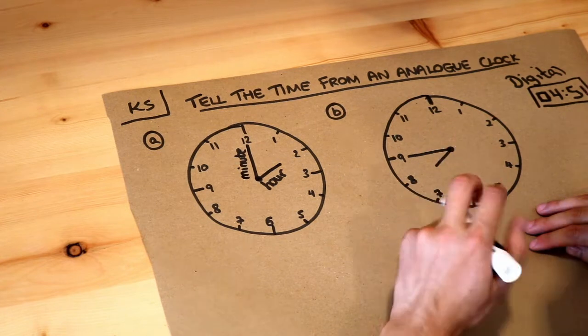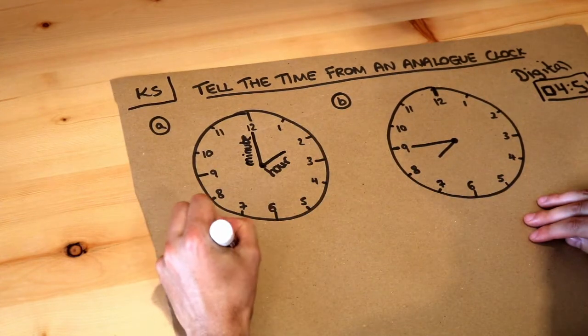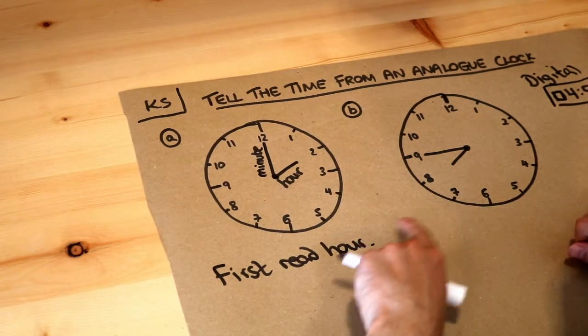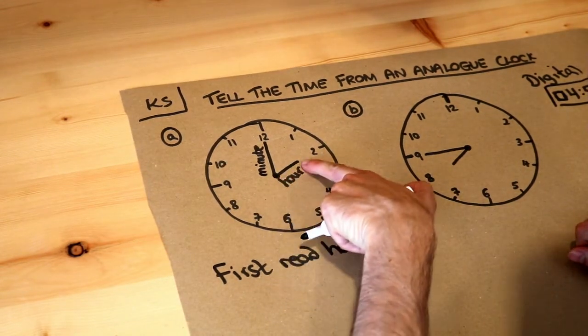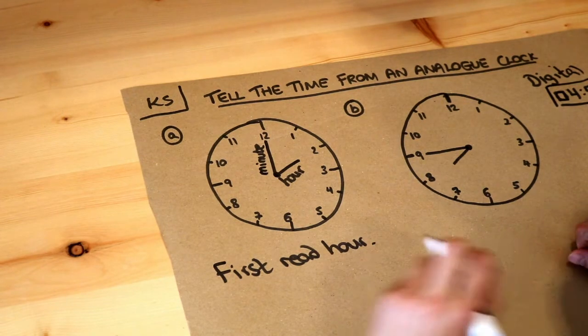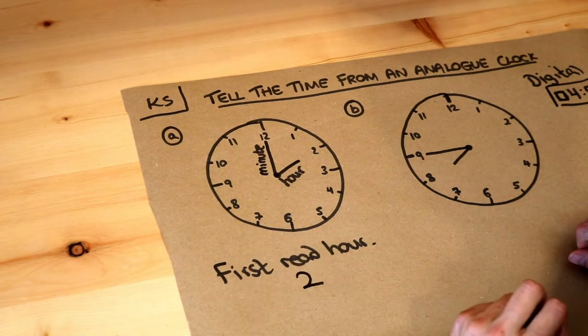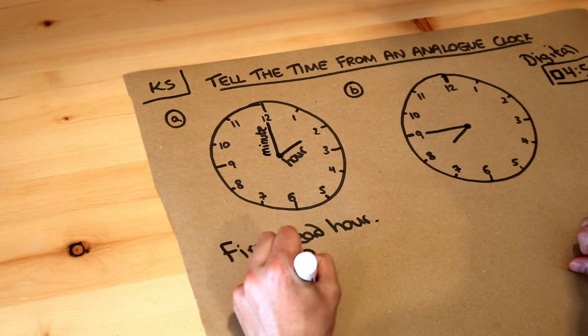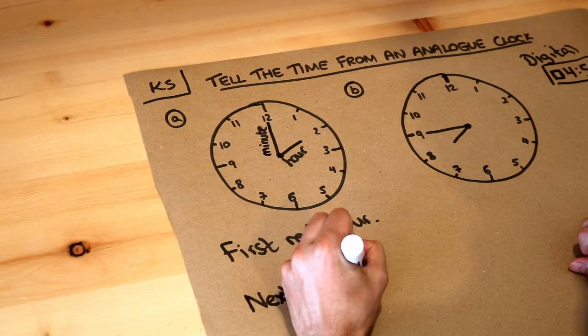Now we need to first read the hour. That's the easier bit, if you like. If we look at the hour, can we see that the hour hand is pointing at 2? So the hour hand is reading 2, and then we want to next read the minute hand. Then we're going to put the numbers together.